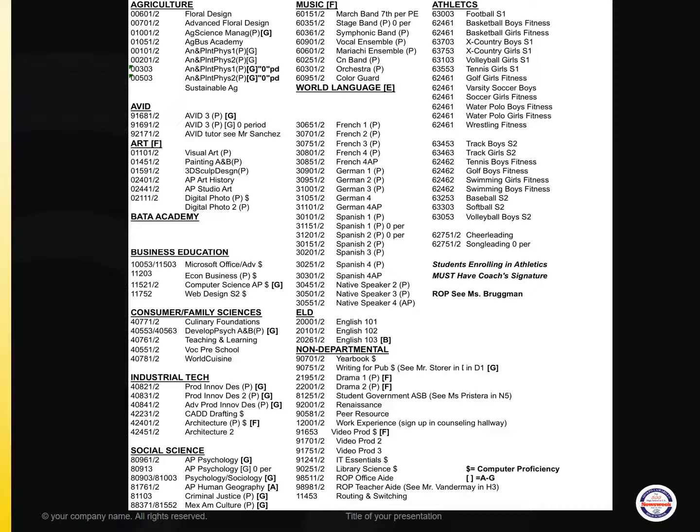Spanish 1 and 2 are also offered zero period — priority goes to students enrolled in AVID, the Business Academy, or the Agricultural Science Pathway. Under ELD, we offer English 101, 102, and 103. Under non-departmental, we offer yearbook, writing for publication (see Mr. Storer), drama 1 and 2, Student Government or ASB (see Ms. Pristera in N5), Renaissance class, Peer Resource, Work Experience if you have a job (sign up in the Counseling Hallway after Spring Break), Video Production 1, 2, or 3, IT Essentials, Library Science, ROP Office Aid or ROP Teacher's Aid, and Routing and Switching.